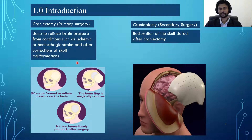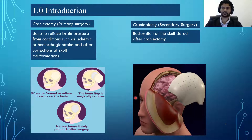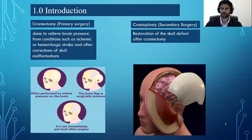Now, this secondary surgery is done sometime after the primary one. The timeline varies — it can be as early as three months or as late as 12 months. It really depends on the health of the patient, but generally they perform cranioplasty as soon as possible. And yes, as bizarre as it sounds, people do go that long with a hole in their skull.